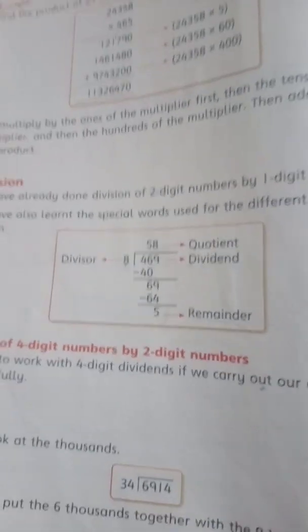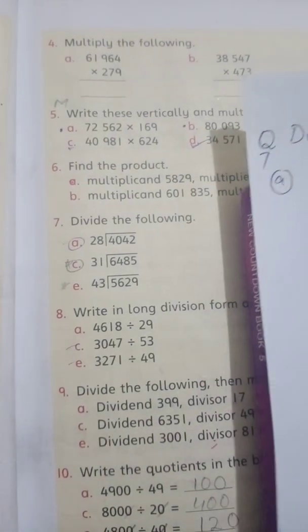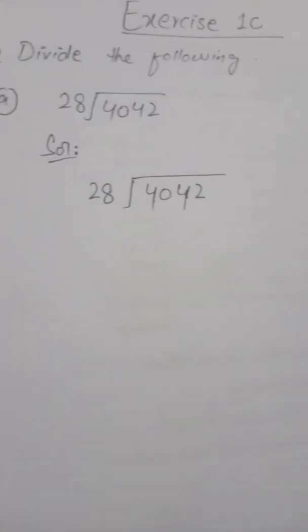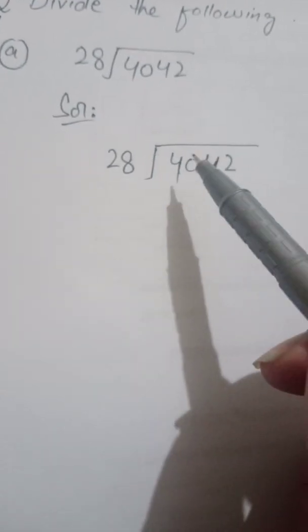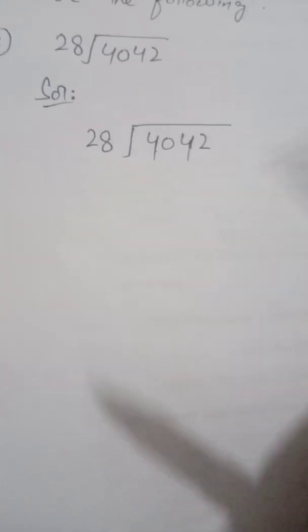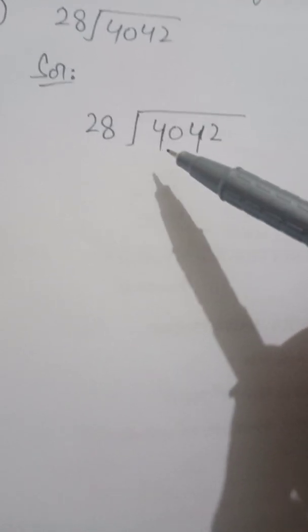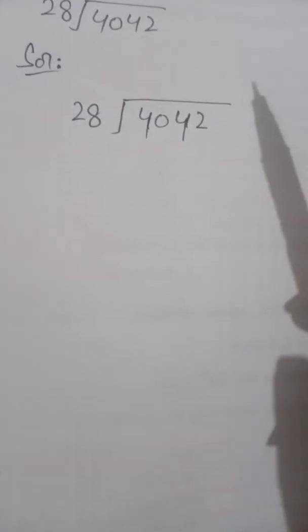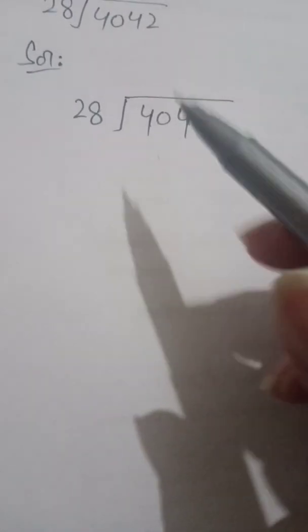Okay students, we will do Exercise 1C, Question Number 7. Part A is 4042 divided by 28. The rule here is: if we have two digits outside (divisor), then we take two digits from inside the dividend as well. So we take 40 here, since 28 has two digits.